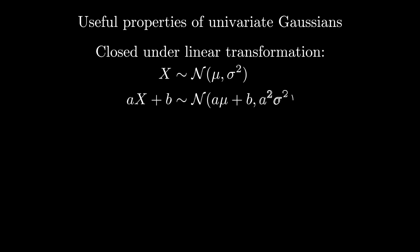We'll start out by looking at the univariate Gaussian distribution, which is defined just on the real line. One important property that is really useful for Gaussians is that they're closed under linear transformation. That is, if I have a Gaussian random variable with mean μ and variance σ², and I multiply that random variable by a constant a and add a constant b, then I get a new random variable that is also Gaussian distributed. The new mean is a times μ plus b, and the new variance is a² times σ².